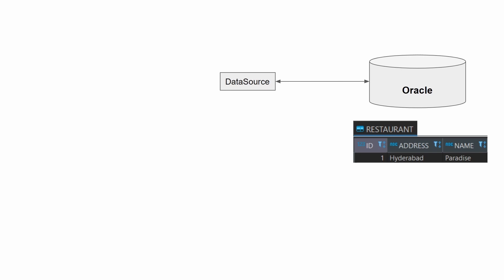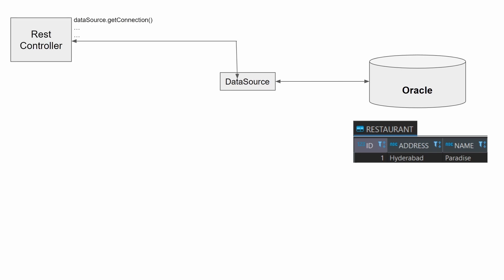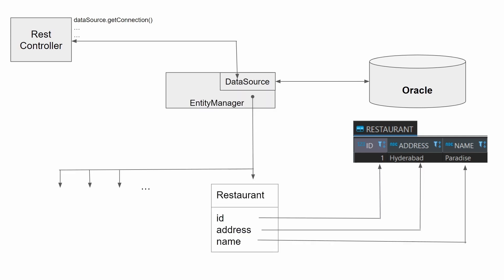The REST controller can directly use the DataSource bean to get the connection, then prepare the statement and fetch the result in the result set. These steps are a kind of boilerplate code and we have to repeat these steps wherever we want to perform the CRUD operations.